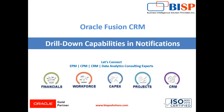In this video, we are going to learn how to enable drill down capabilities in activity notifications in Oracle Fusion application. You can enable salespeople to drill down to an activity from a notification list or an email. With this enhanced notification feature, salespeople can take action on an activity from the notification list or an email. For example, they can click a link in an email to accept or decline an appointment, or mark a task as completed.